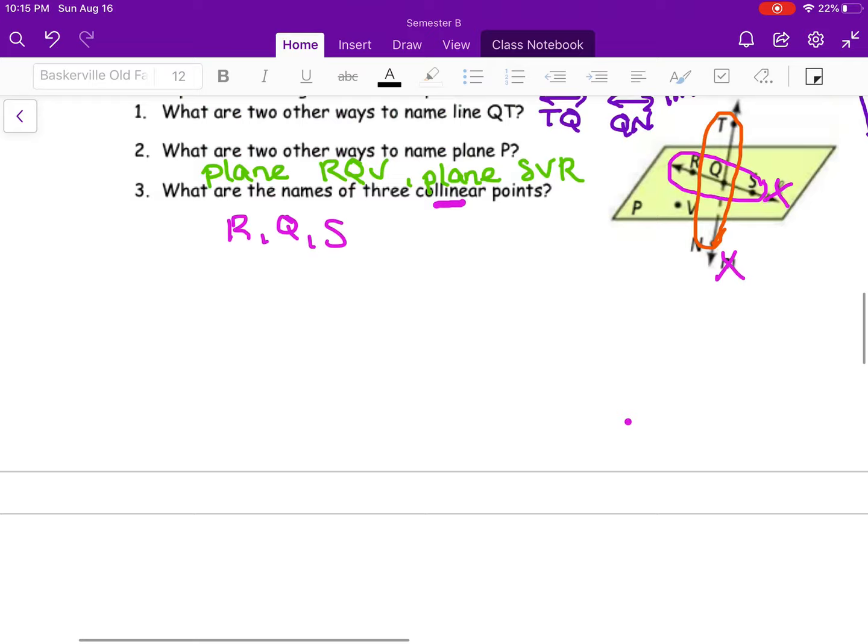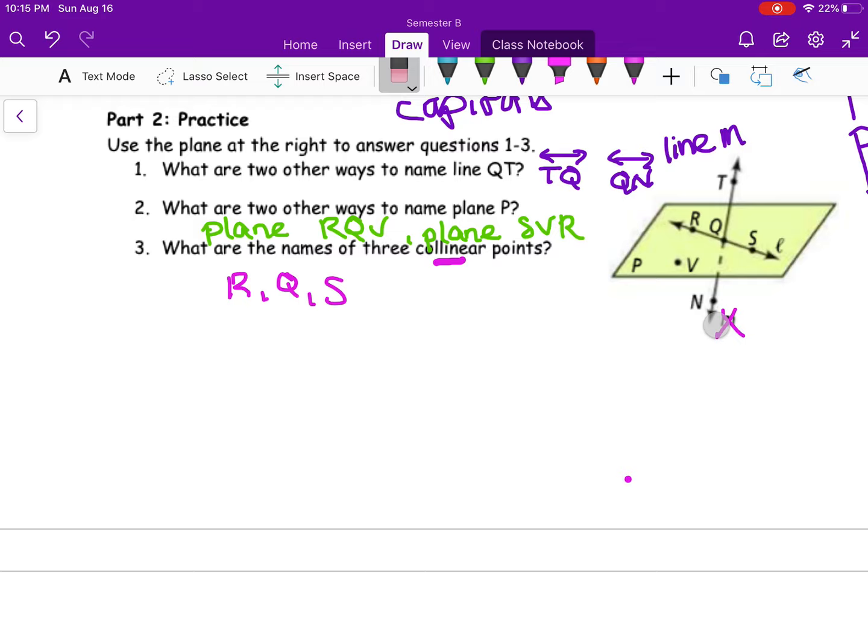What are the names of four co-planar points? So we kind of talked about that before. Four co-planar points, points that fall on the same plane. So R, Q, S, and V are your only options.